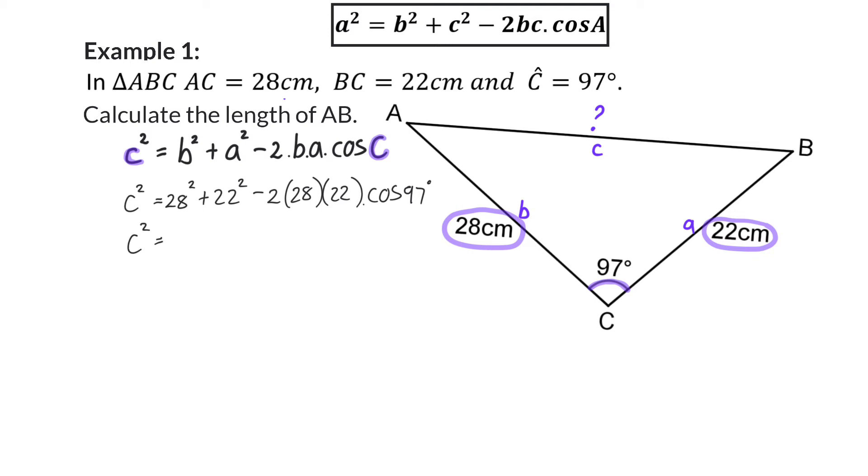The right-hand side can then be calculated as 1,418,143, and to get the final value for C, we need to take the square root of this, and that will be 37.66 centimeters.